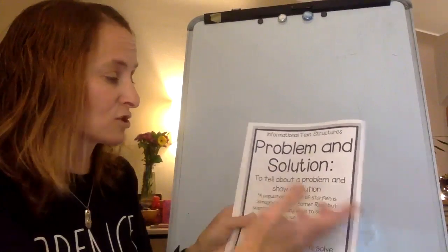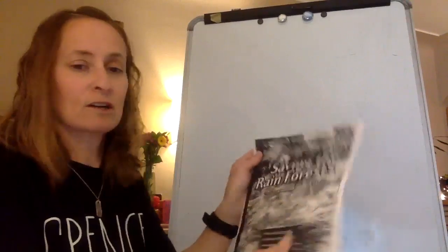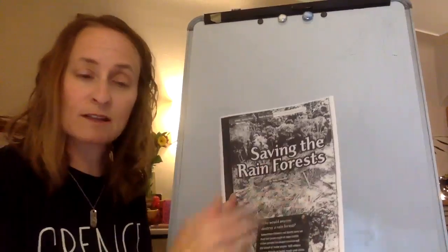That is also something that you're going to come across when you're doing informational text reading. Basically, it's telling about a problem and showing a solution. I put in here an article called Saving the Rainforest, which kind of goes back to the different text we read about rainforests a couple weeks ago.